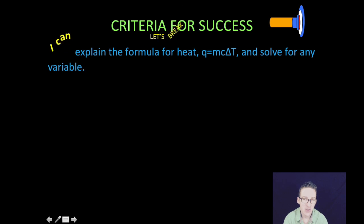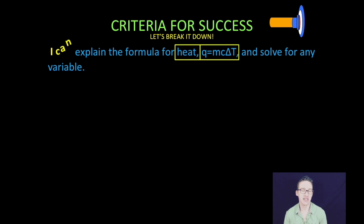As always, breaking it down a little bit for you, you may recognize that content objective is very similar to the one in the previous video. This time, we're going to look at it a little bit differently and focus on the formula of heat, which is Q=mcΔT (MCAT for those who don't know the Greek alphabet), and solve for any of those variables.